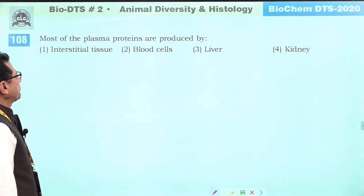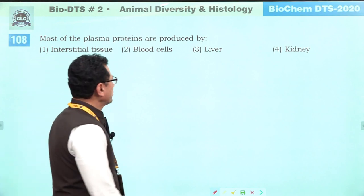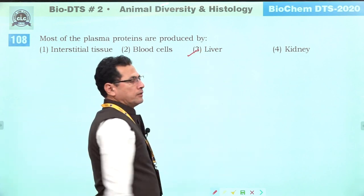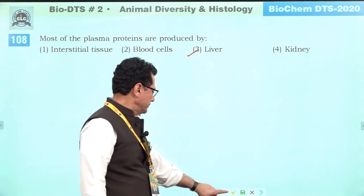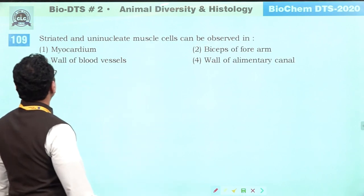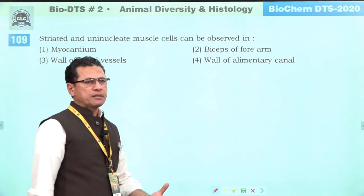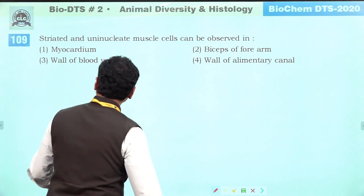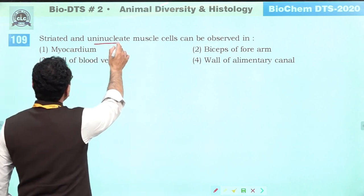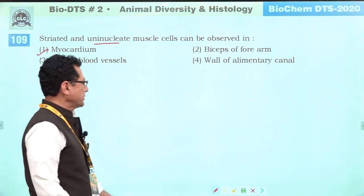Most plasma proteins are produced by the liver. Striated and uninucleated muscles are cardiac muscles — they are striated and have a single nucleus, found in the myocardium.